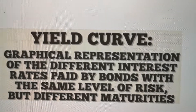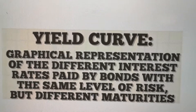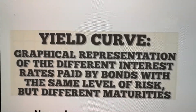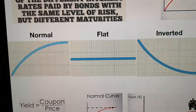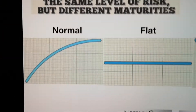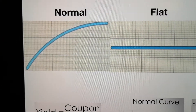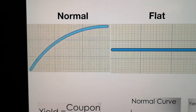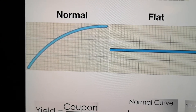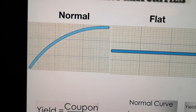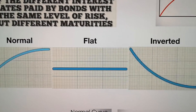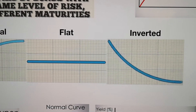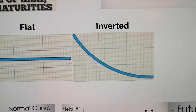For the Yield Curve, you can imagine there are three types: either we call it normal, where the curve is going up, flat, or inverted.